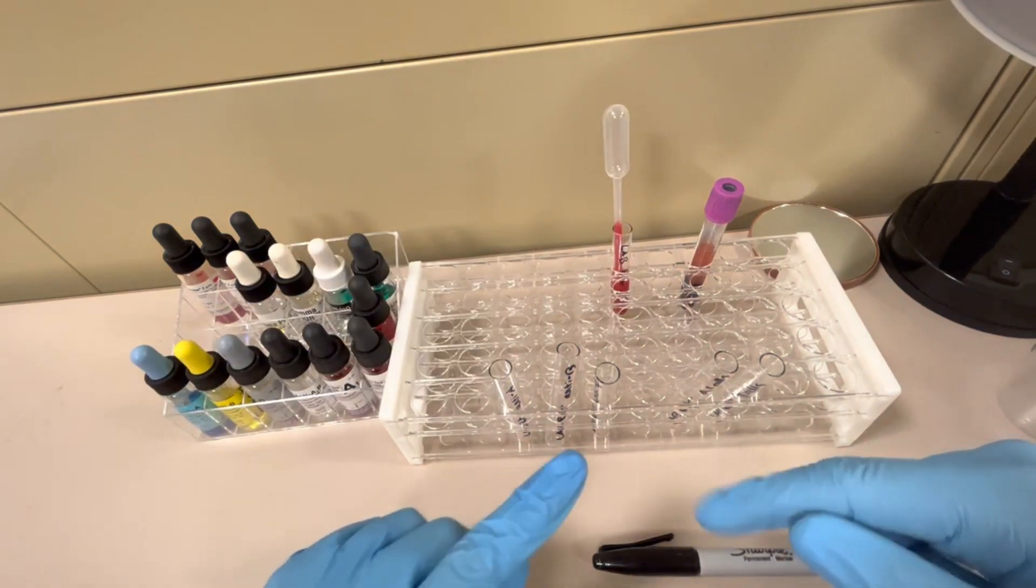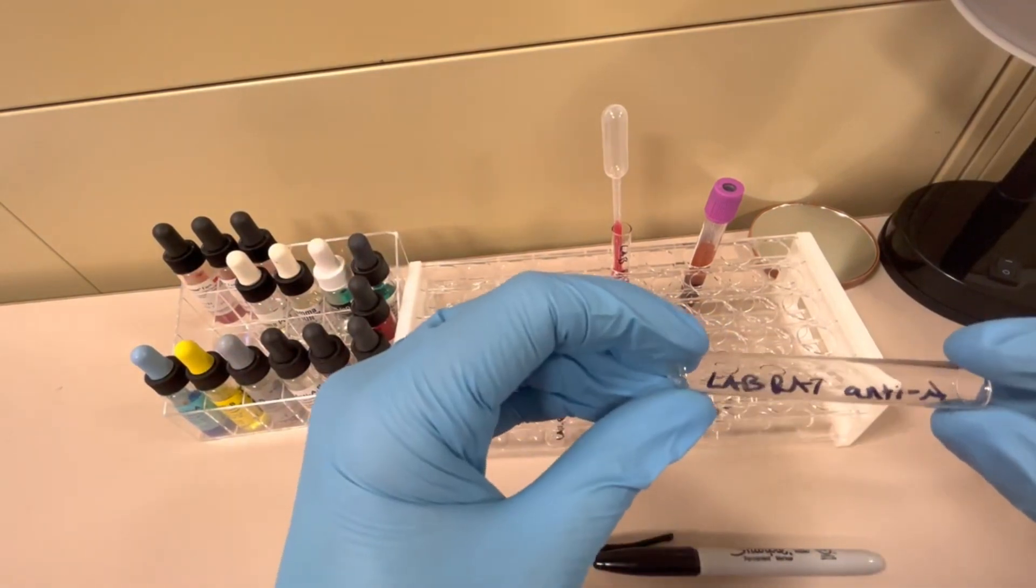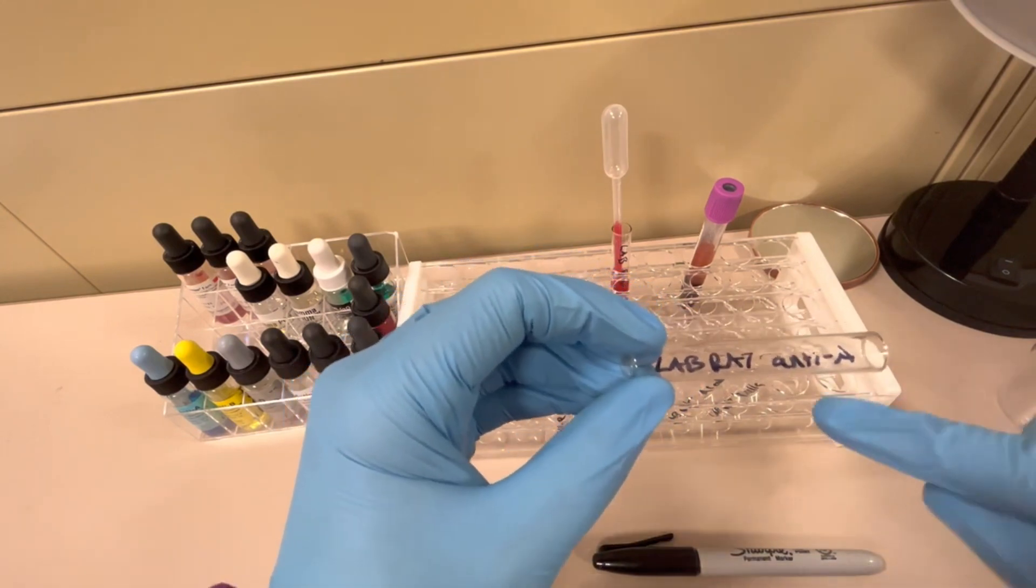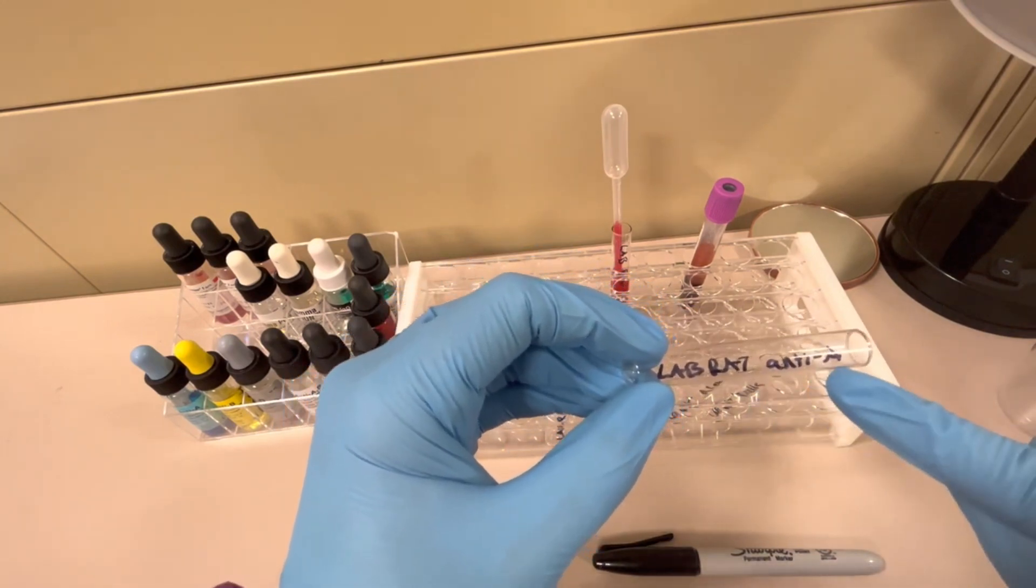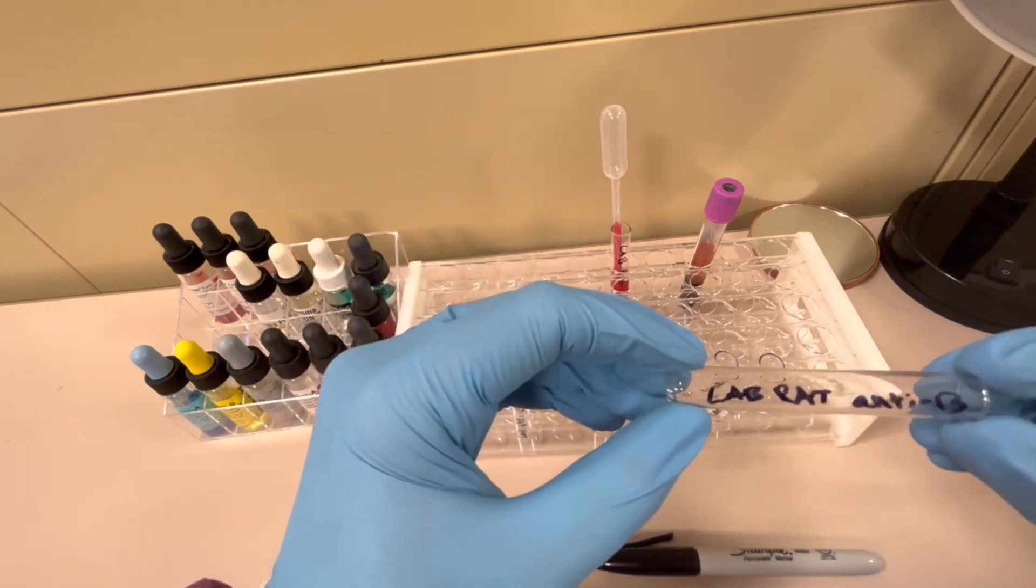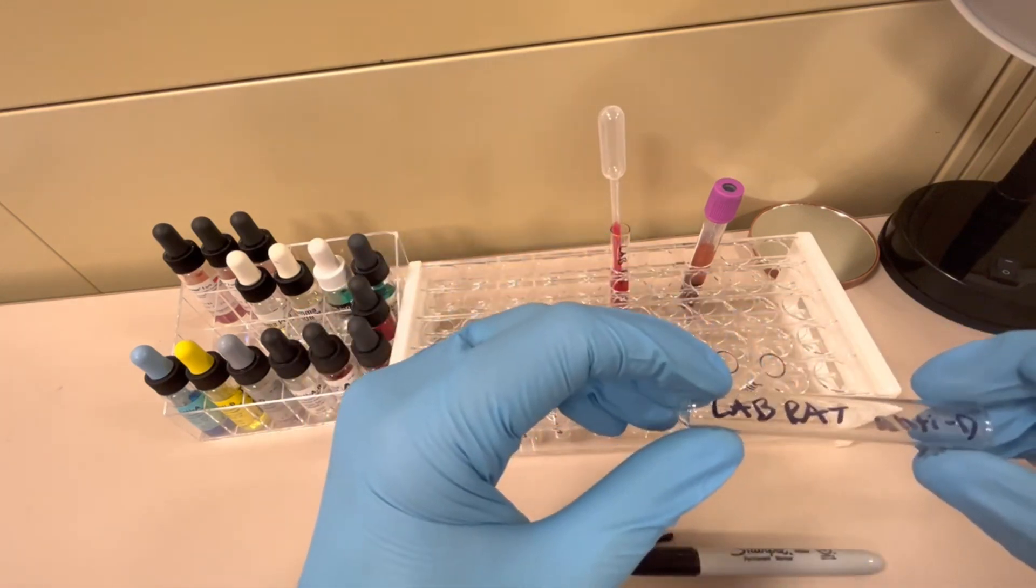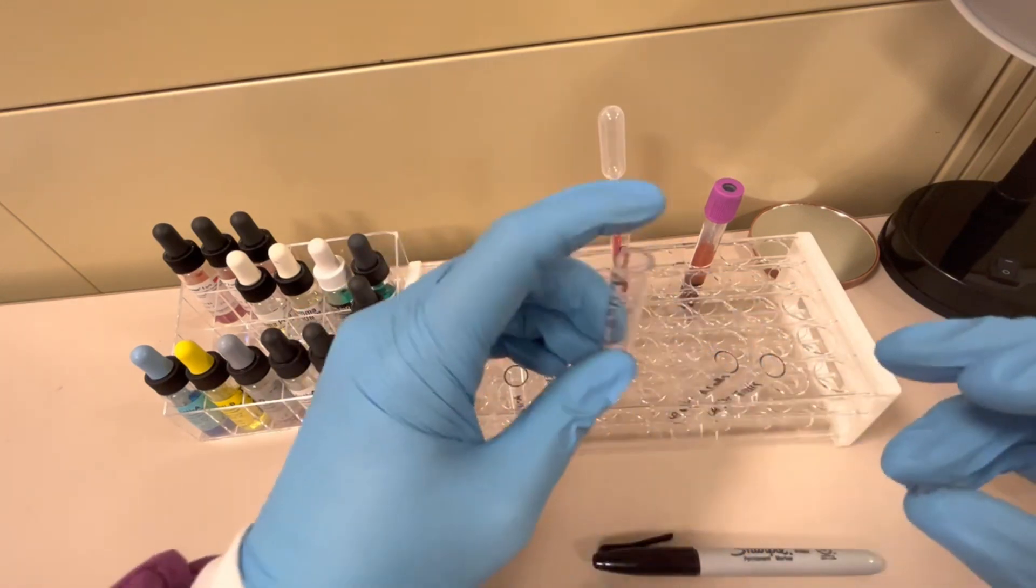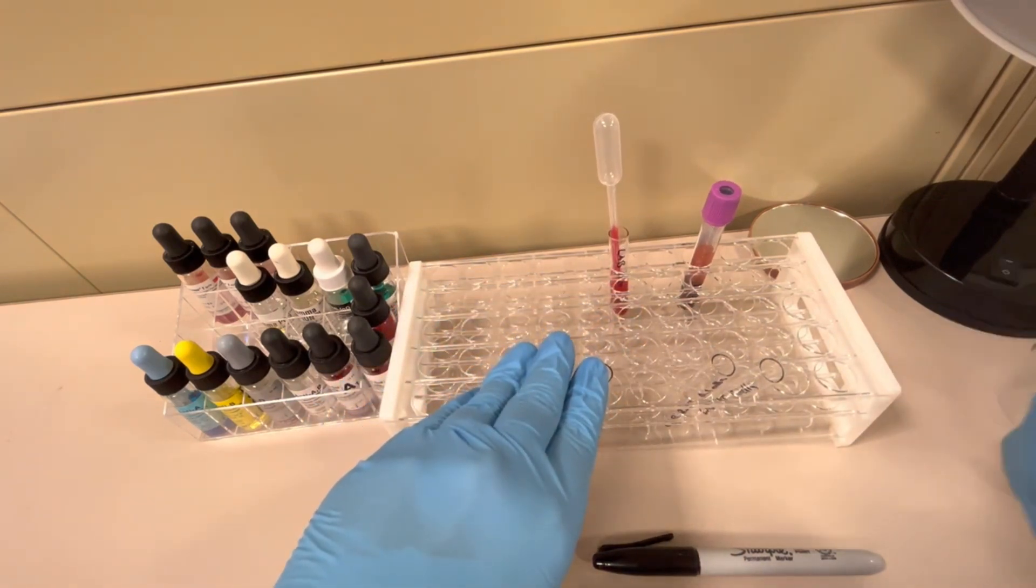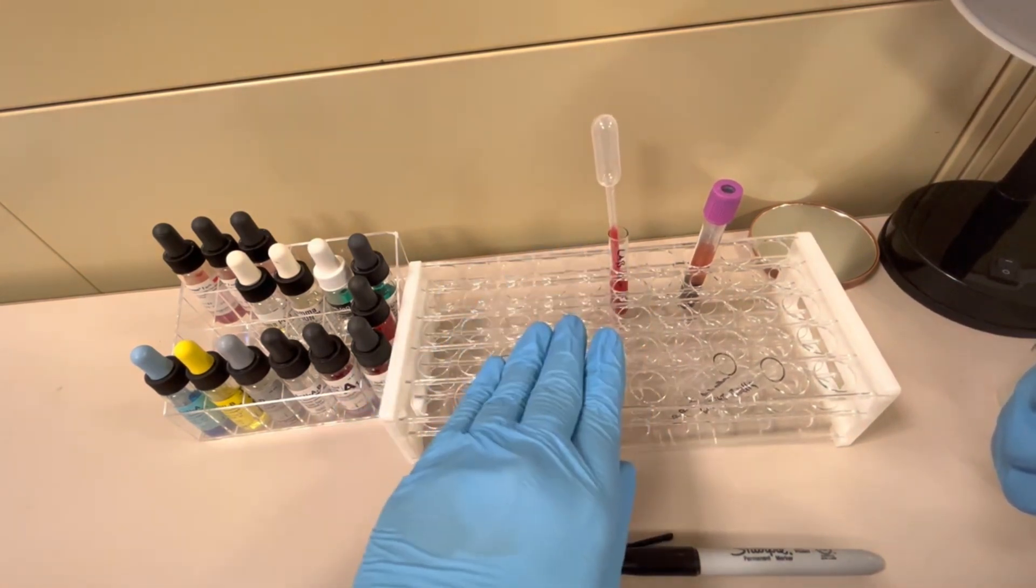I also need labeled tubes. Each one of these tubes in permanent marker I've labeled with the patient's identification and also what reagent I'm going to be putting in here. This one is labeled LabRat and Anti-A. This one is labeled LabRat and Anti-B. The next one is LabRat and Anti-D. These are all my forward typing or my front typing part of the ABO type.